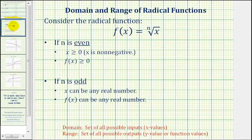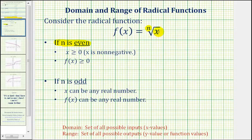So for example, if we have a radical function in the form f of x equals the principal nth root of x, if the index n is even, then the radicand, or the expression underneath the square root, has to be greater than or equal to zero, meaning the radicand has to be non-negative. And if the radicand is non-negative, then the function values or the y values will always be greater than or equal to zero.